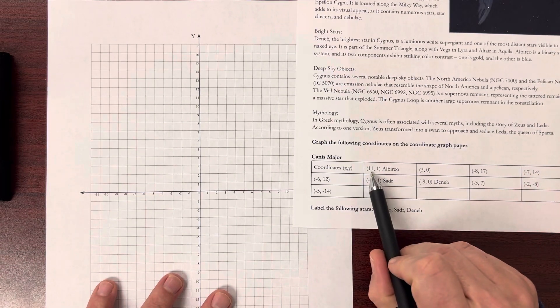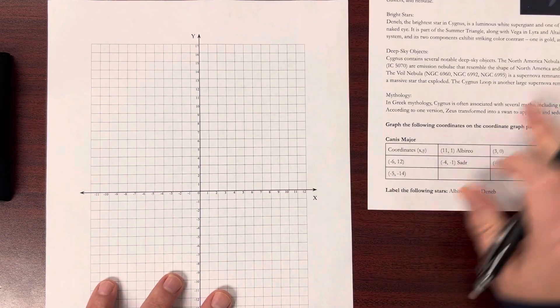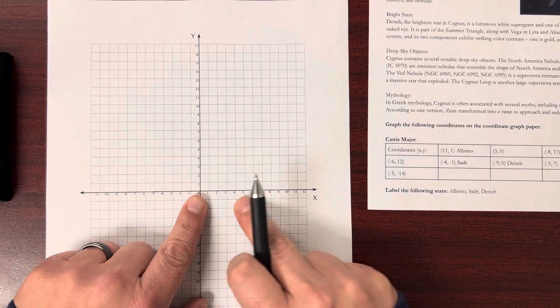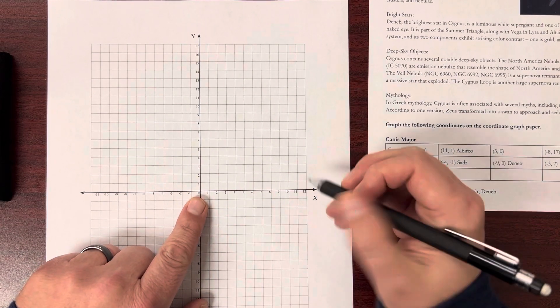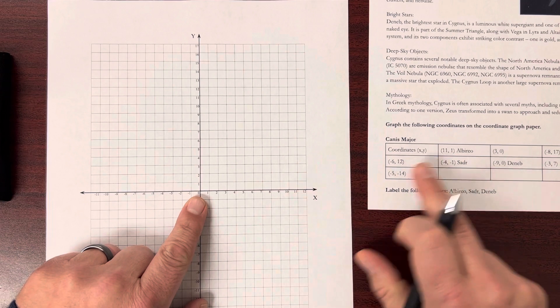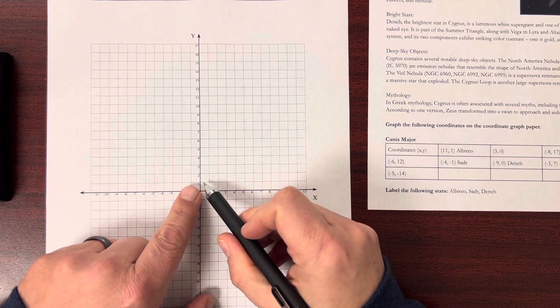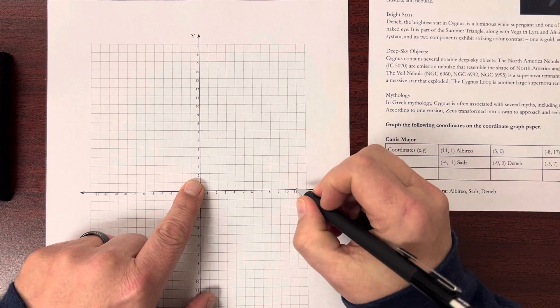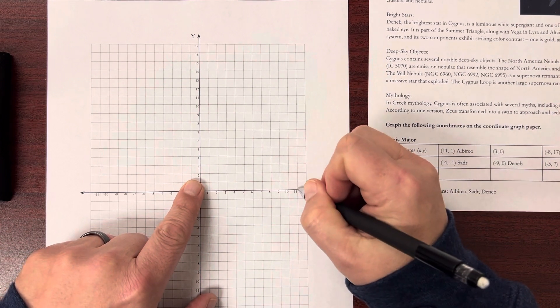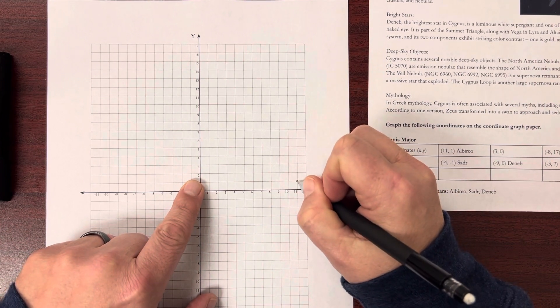So again, let's go with this first one, 11, 1. To do this, I find my x coordinate, which is 11 right here. And then 1 for my y coordinate, which is right there. And I just put the star where those two meet. So 11 and 1 is right here.